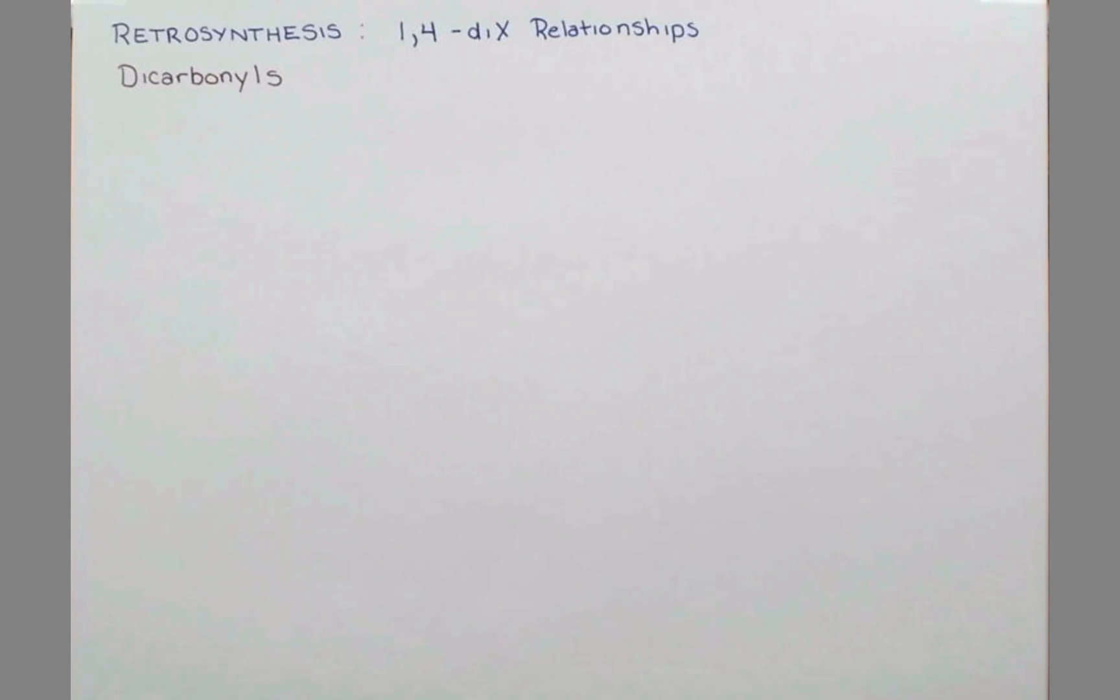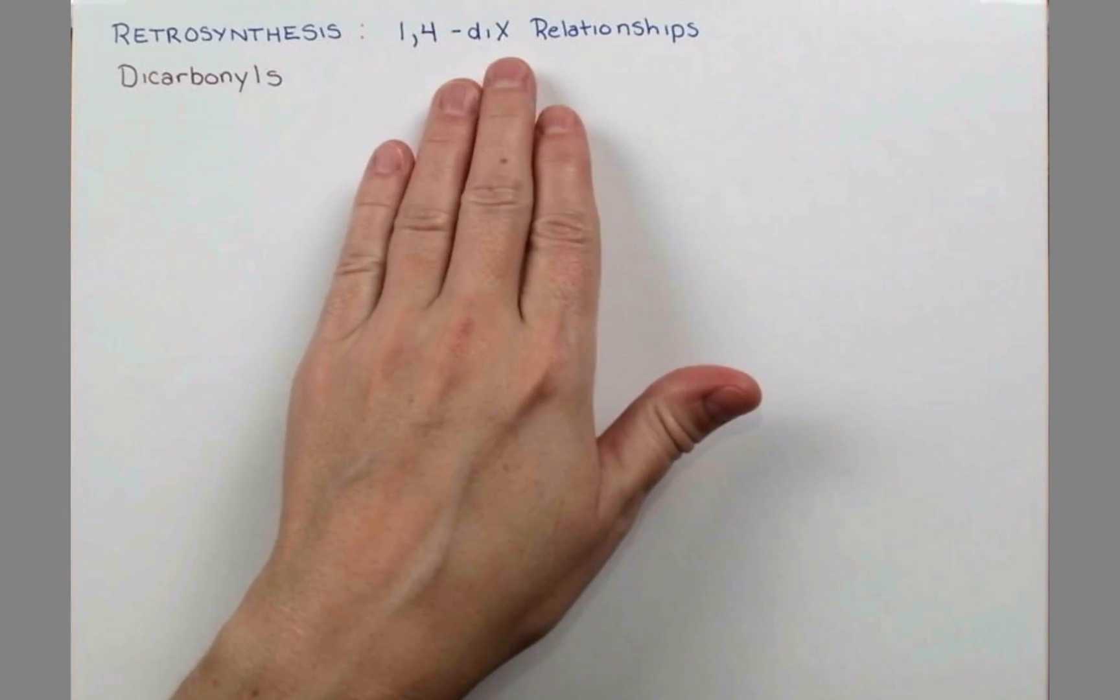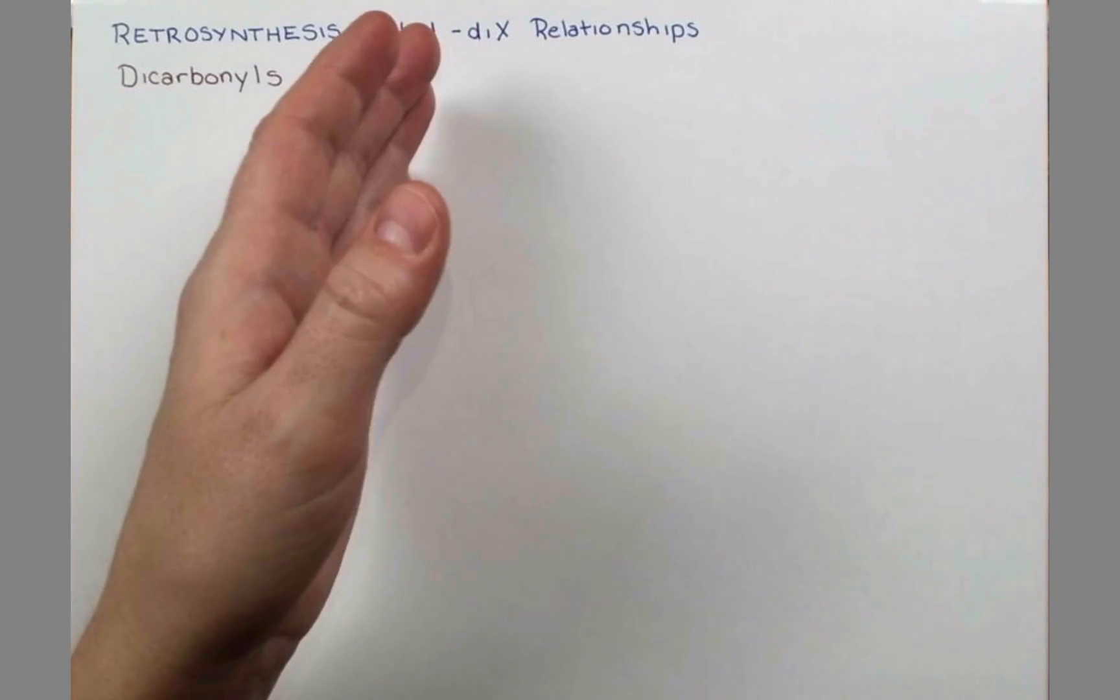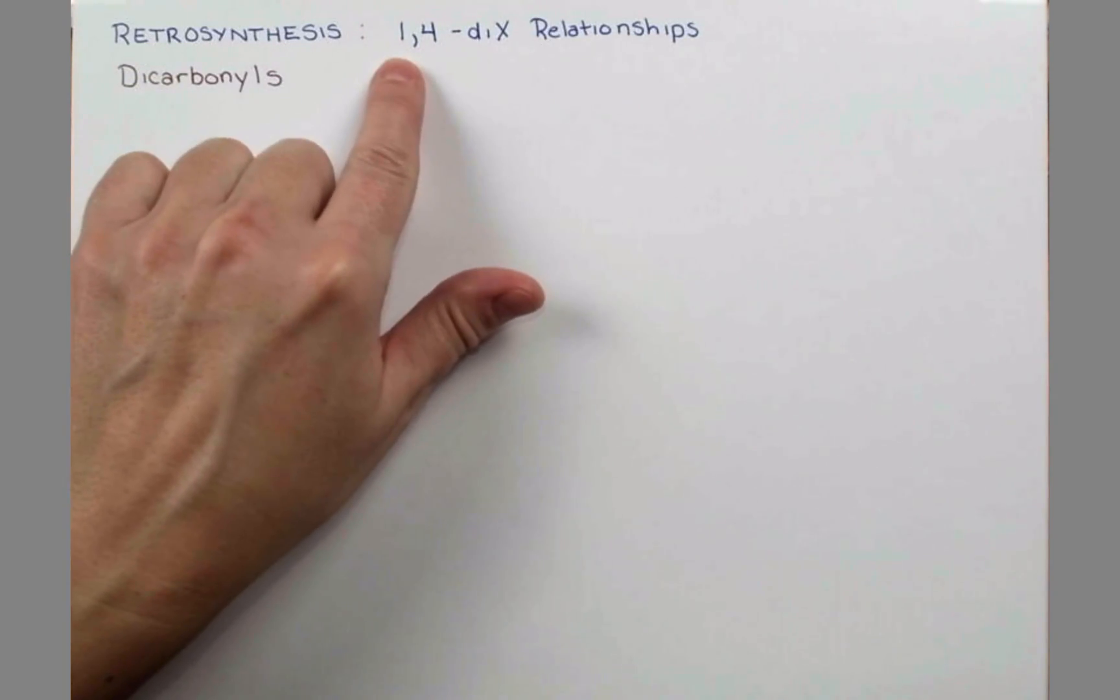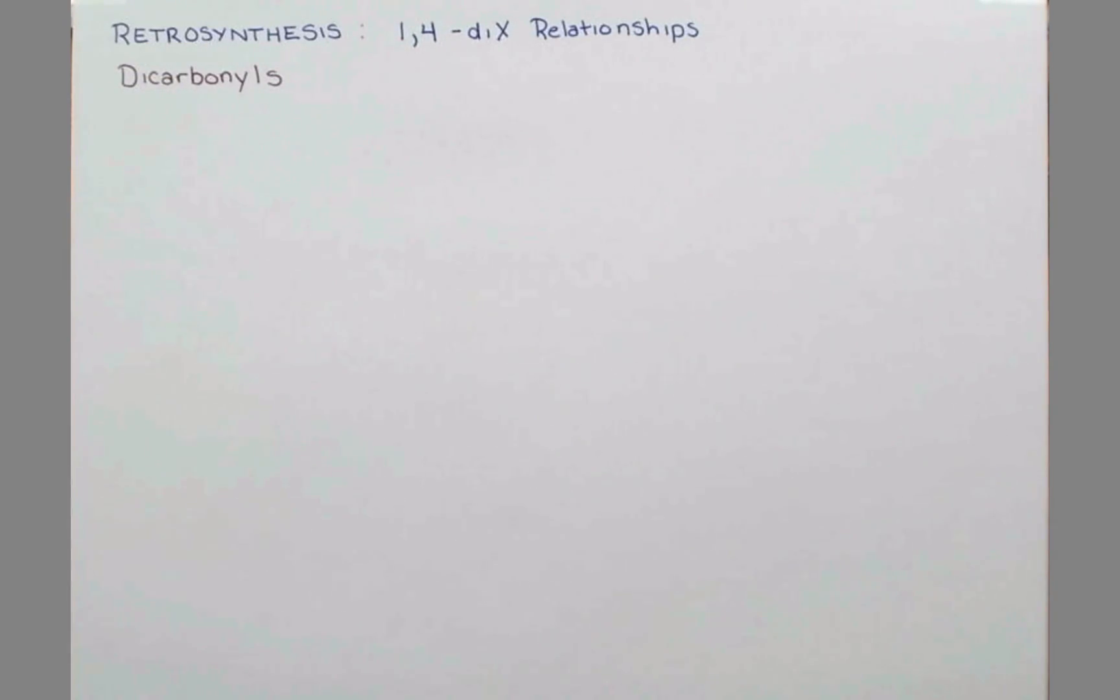In this lesson, we're going to cover four methods for getting this 1,4-di-x relationship. We're going to have two functional groups that are on the 1 and 4 carbon atoms of whatever molecule that we have.